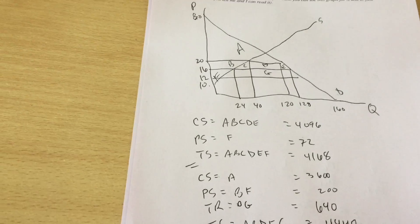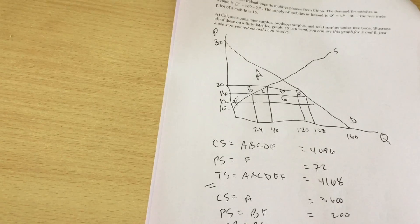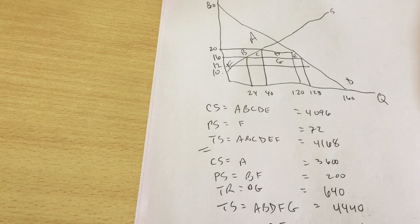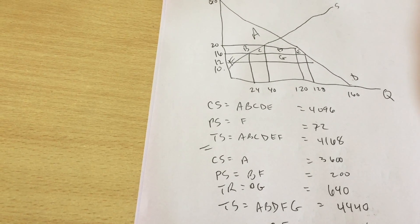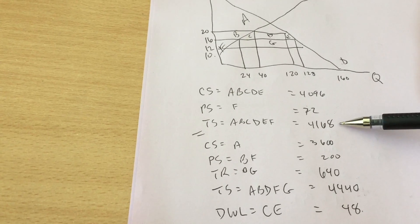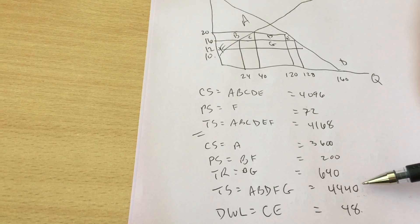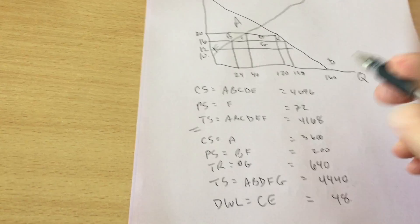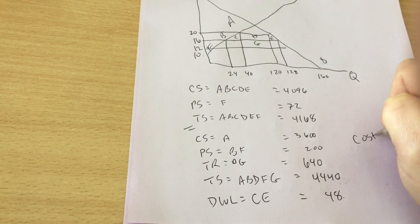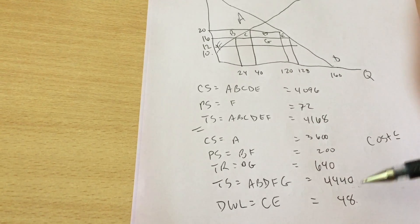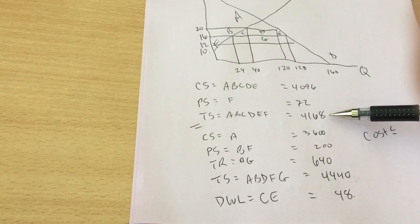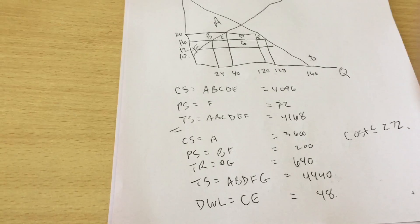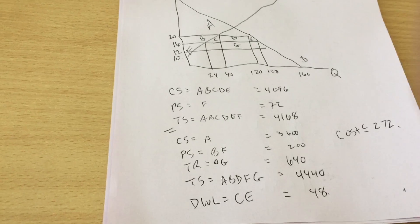So the last bit of the puzzle is part C. Suppose that there's a border inspection cost. How big could that be for this tariff to still make sense? So under the free trade we get a total surplus of 4168. Under the tariff we get 4440. So that cost cannot be any bigger than the gap between those 4440 minus 4168. So the cost can't be any more than 272 because that would wipe out any of the gains from using the tariff.